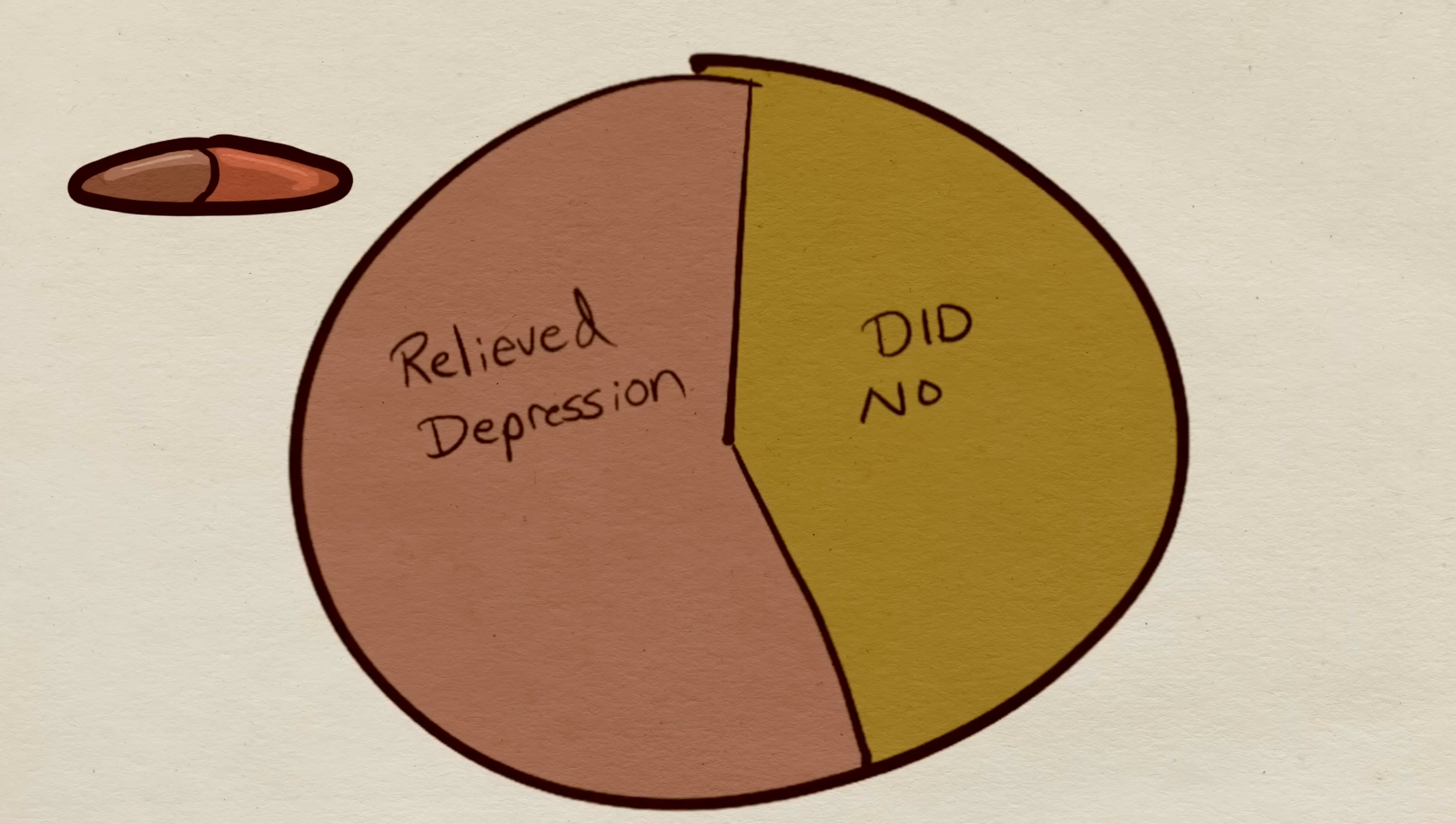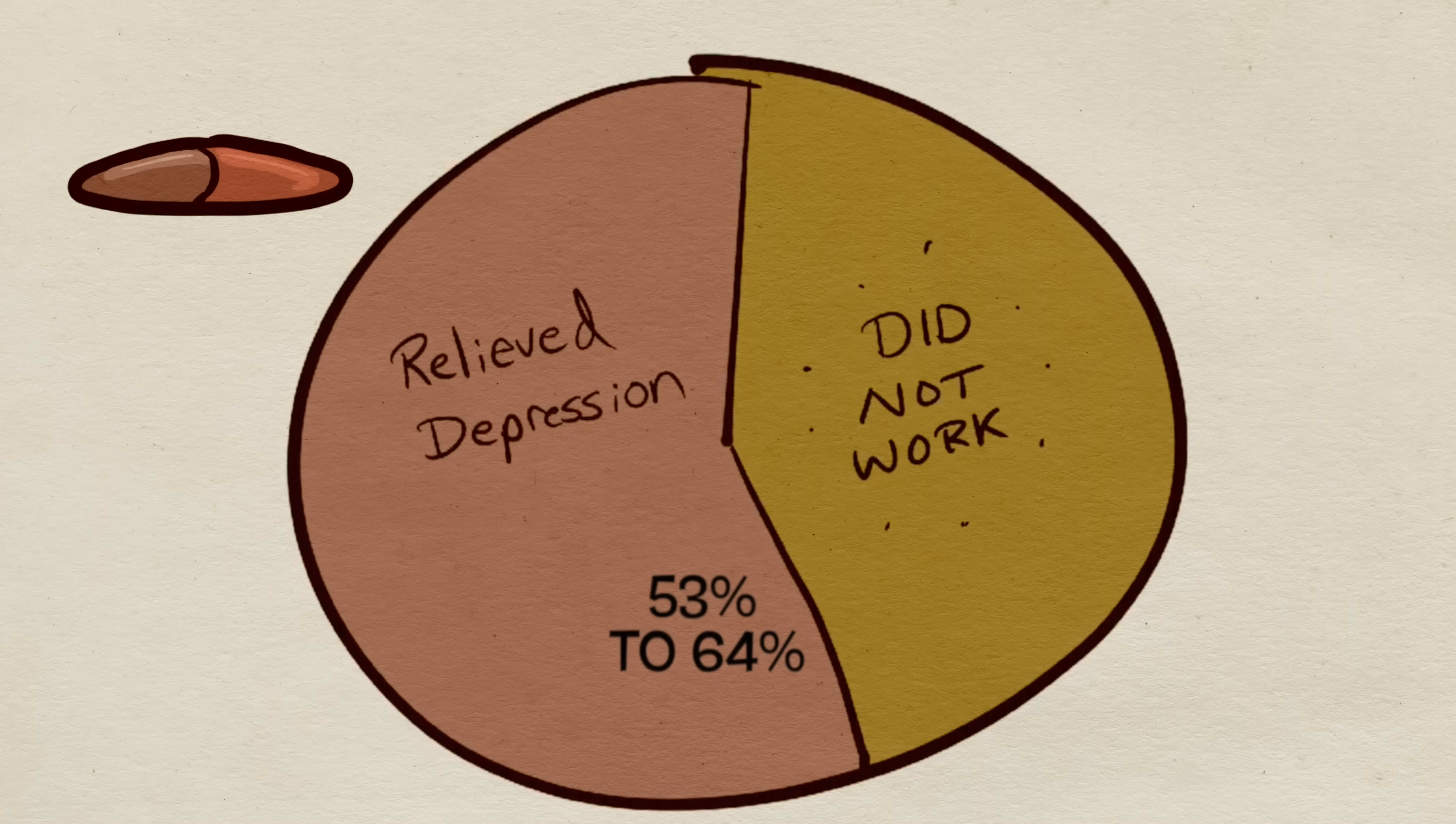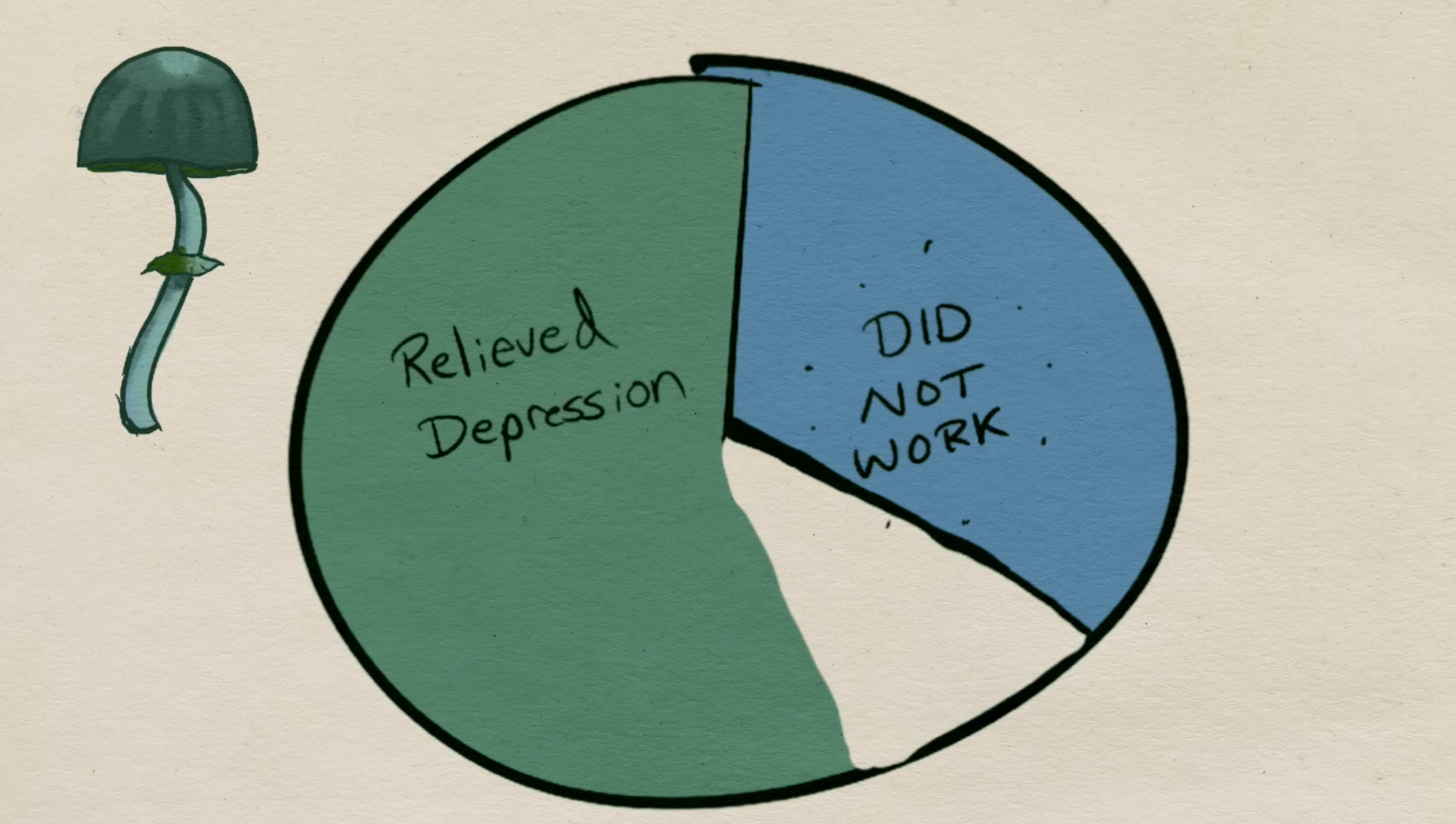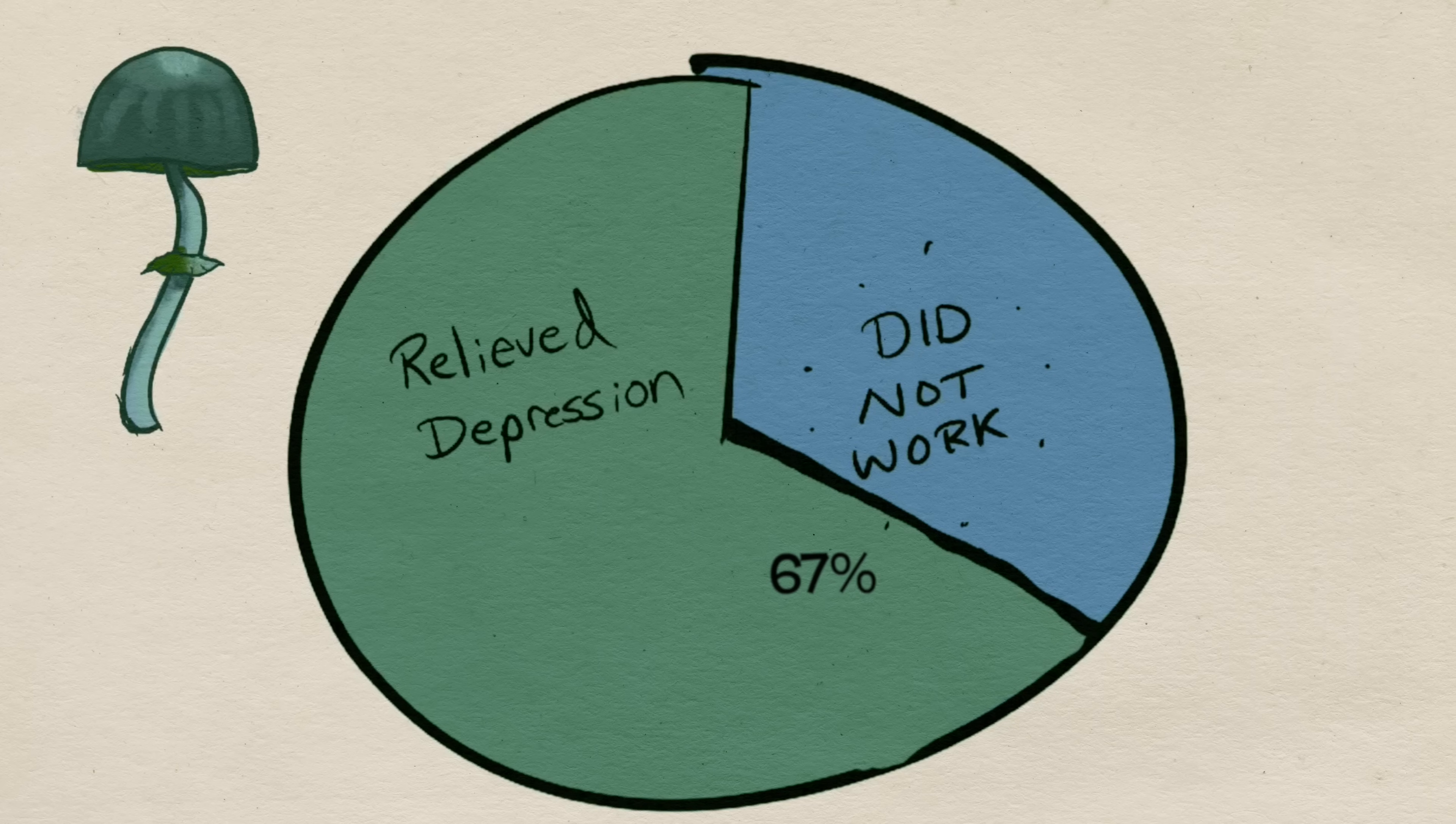SSRIs have been shown to be 53% to 64% effective in relieving depression in patients. That means just over half the people does it work for, which is not a ton. And interestingly, psilocybin therapy, which also targets serotonin pathways, has been shown in one study to be approximately 67% effective in relieving the depressive symptoms of patients. So why does psilocybin work differently?